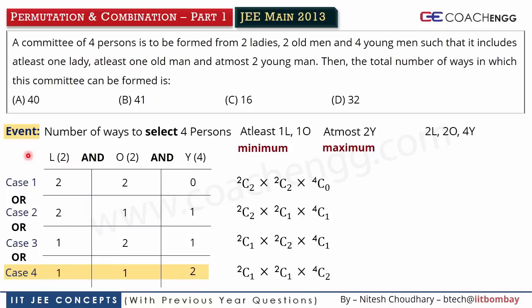Now if completing the event requires multiple cases, we use the OR principle — the addition principle of counting. It states that if you can complete an event in one case this way, or in another case that way, or in yet another case, and these cases have no common outcome, then we add the number of ways from all cases.